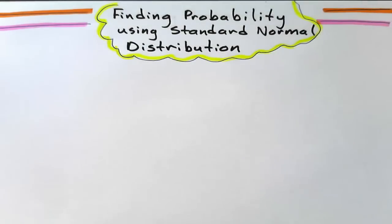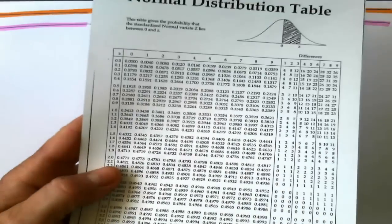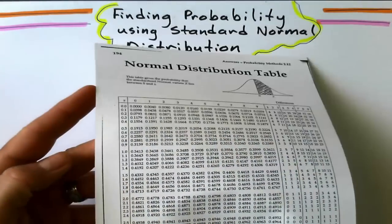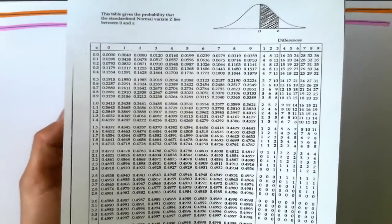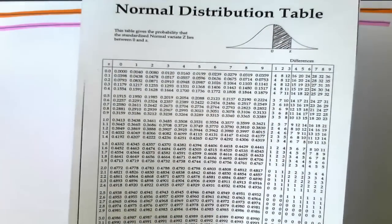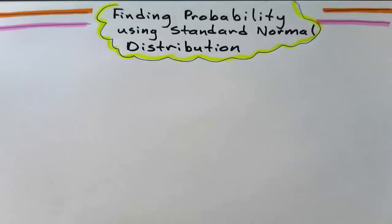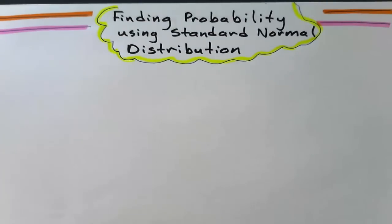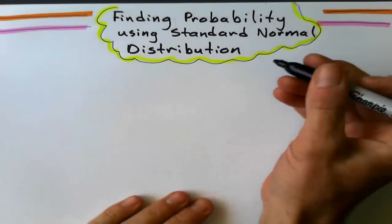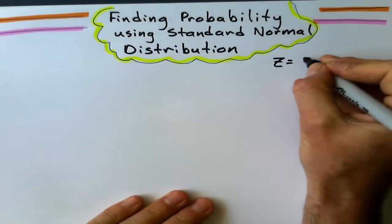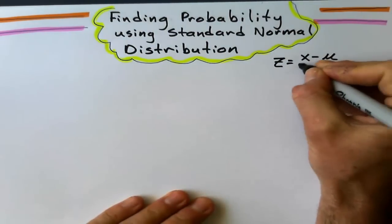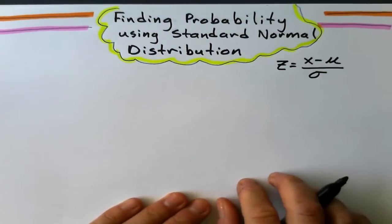Alright, let's do some standard normal distribution problems using the good old fashioned Z table here. Now we're going to be using this table instead of the graphics calculator today for this lesson, so you're going to have to have one of these handy.